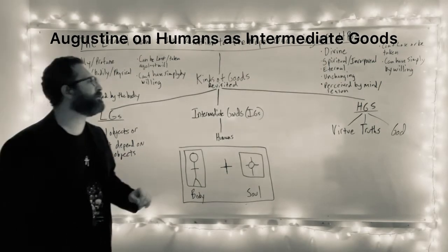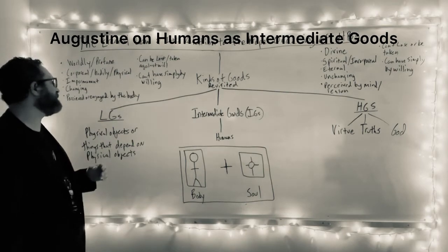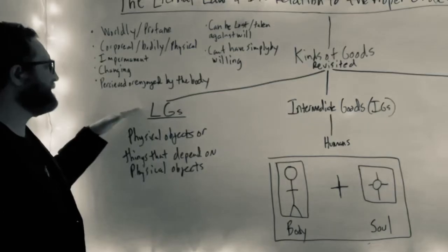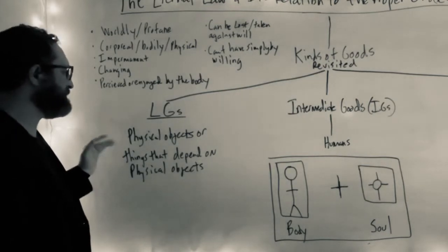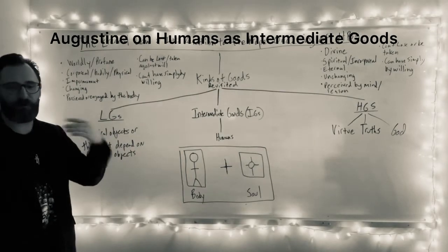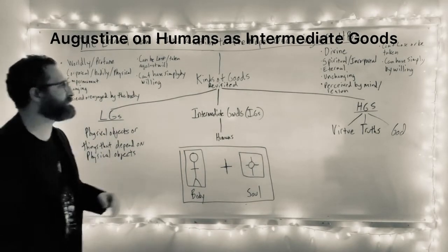So remember, there are two main kinds of goods we've discussed throughout the semester so far. We have the lower goods, which are physical objects or things that depend on the physical objects of the physical world, our physical health, physical beauty, money, that kind of stuff.